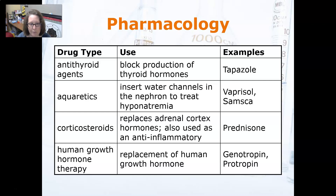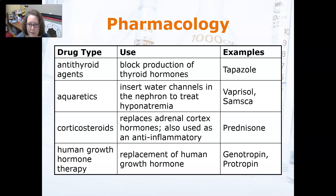Corticosteroids replace adrenal cortex hormones and can also be used as anti-inflammatories. For example, they replace cortisol in a person with Addison's disease — like prednisone. It's also used a lot to treat inflammation and it makes you feel better because it increases your energy.